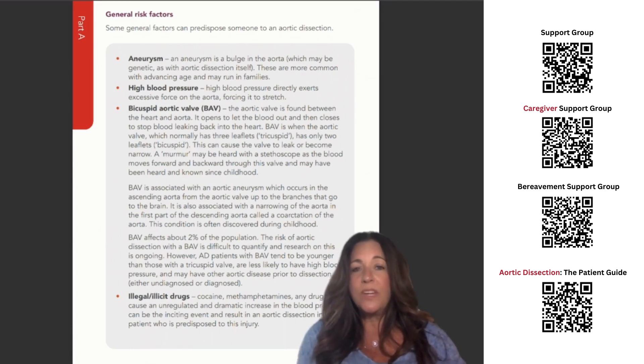BAV is associated with an aortic aneurysm which occurs in the ascending aorta from the aortic valve up to the branches that go to the brain. It's also associated with a narrowing of the aorta in the first part of the descending aorta, called a coarctation of the aorta. This condition is often discovered during childhood.